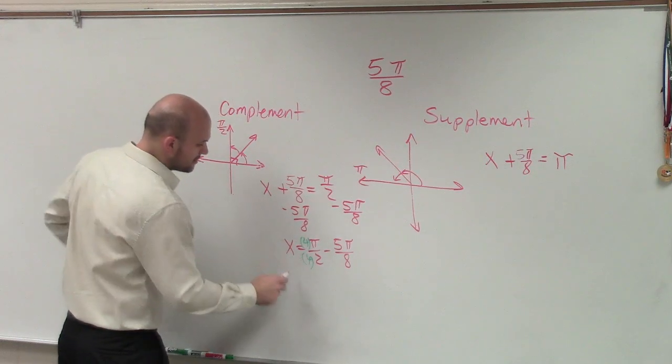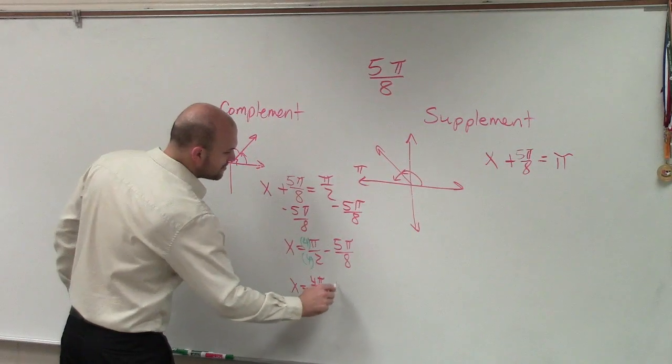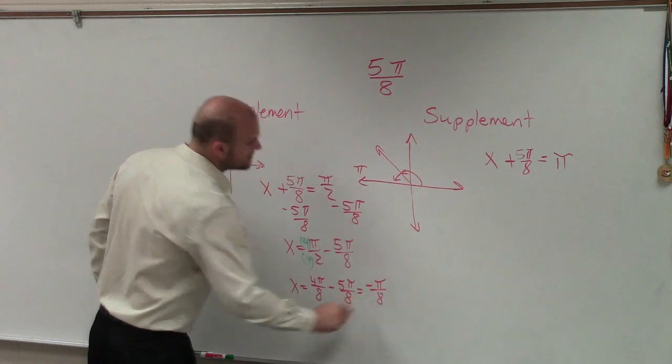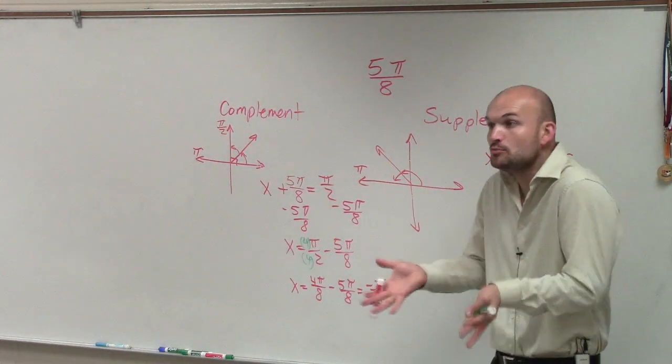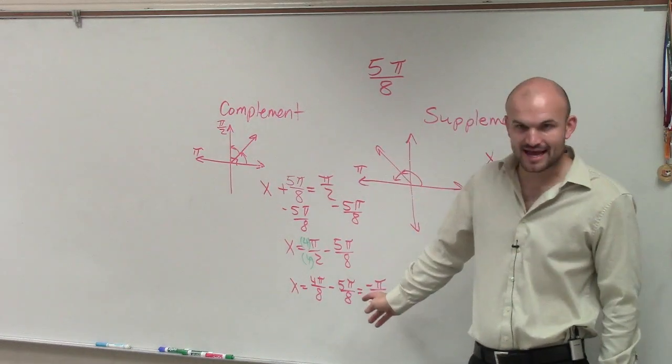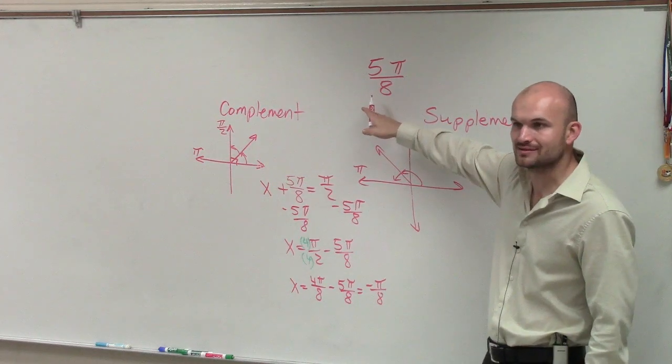So my final answer, I have x equals 4π/8 minus 5π/8, which equals negative π/8. Well, when we're trying to find the complement, we're trying to find two positive angles that add up to π/2. So if I have a negative angle, what that means is 5π/8 is already over 90 degrees.